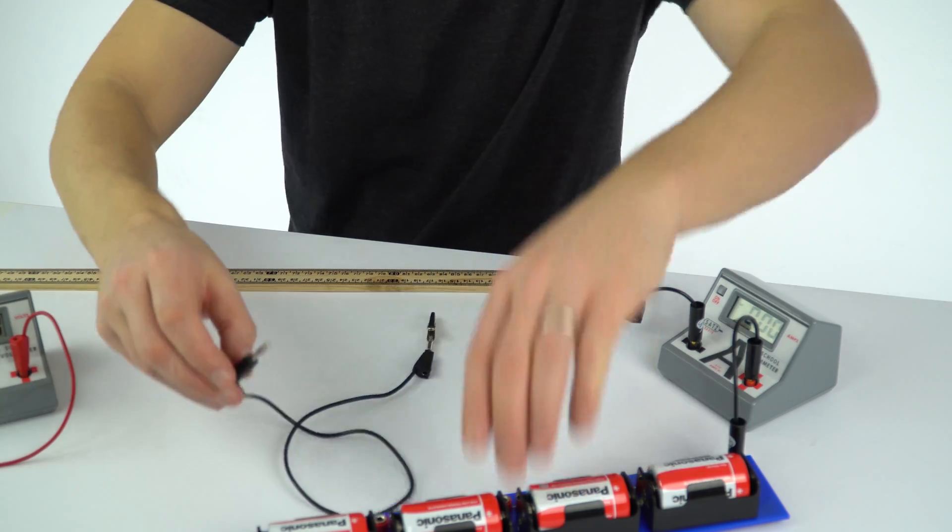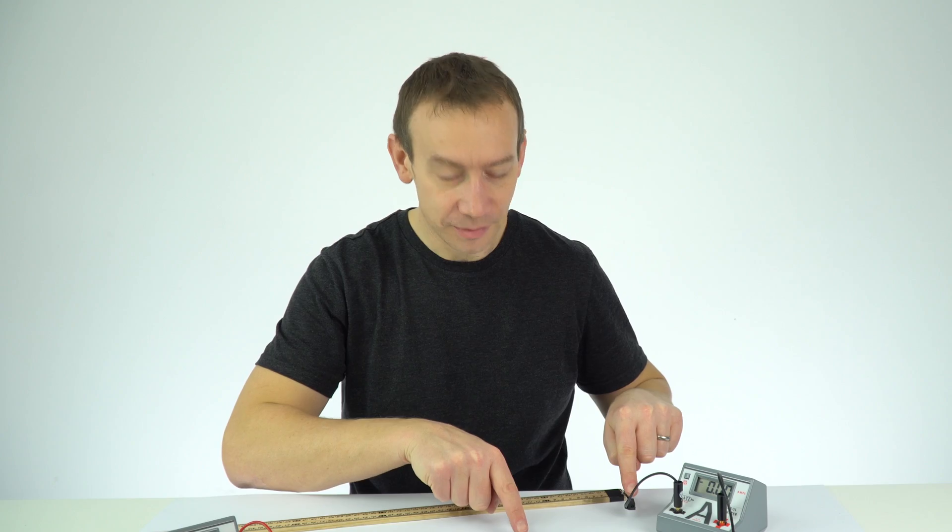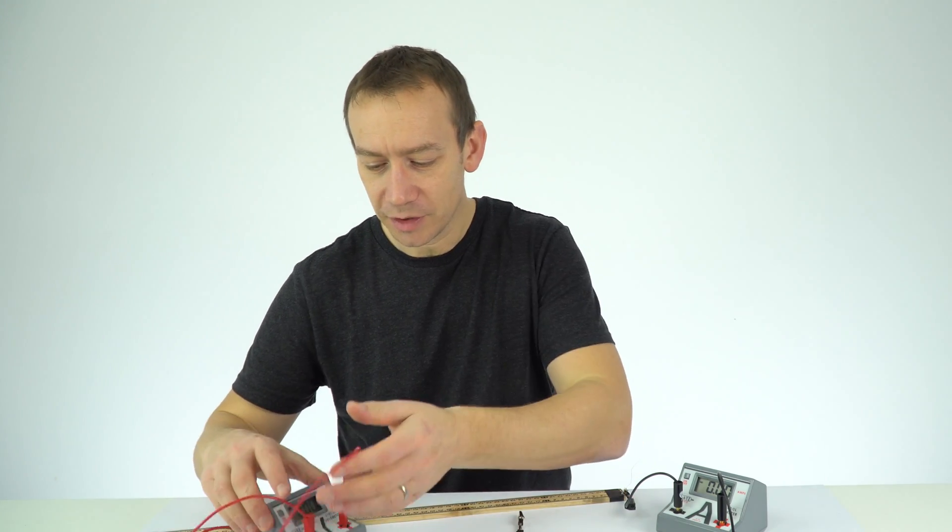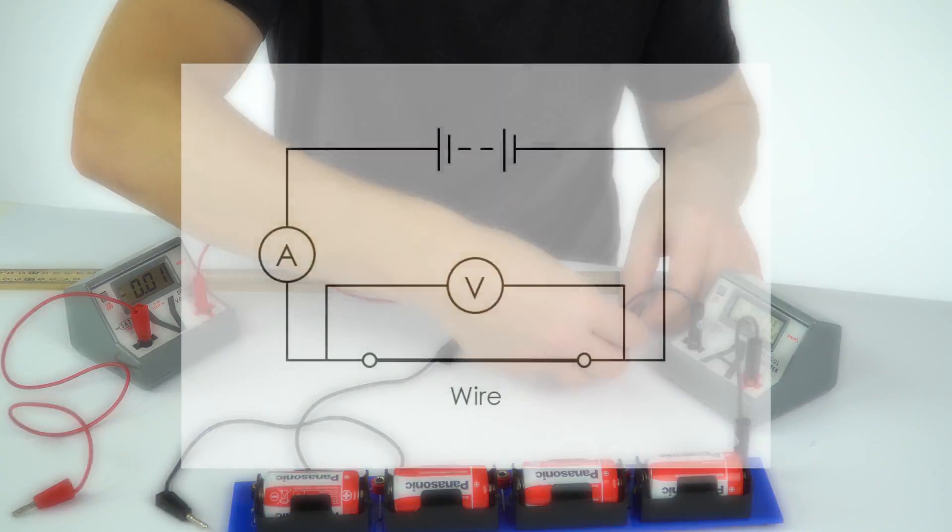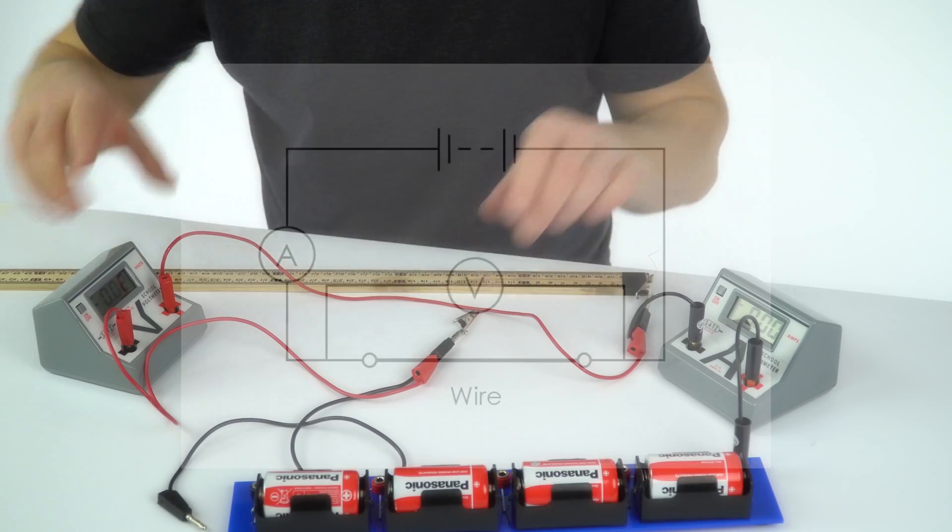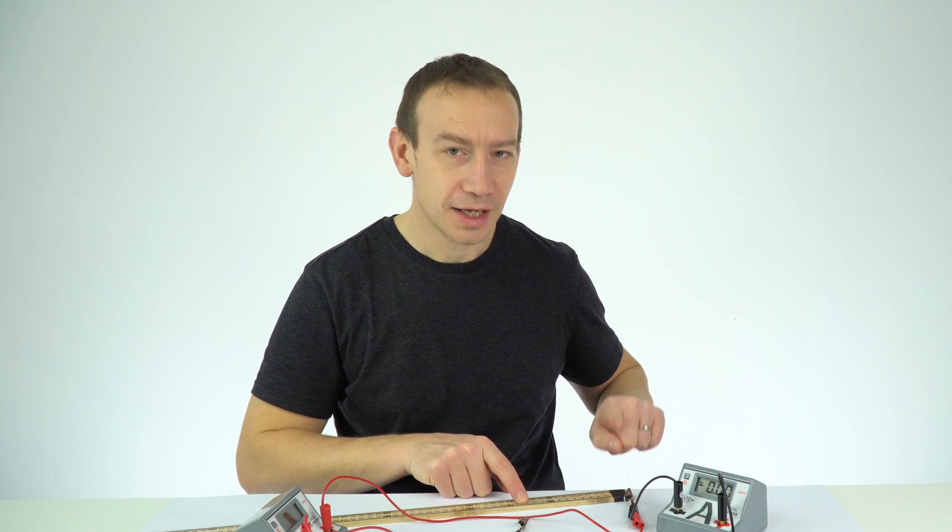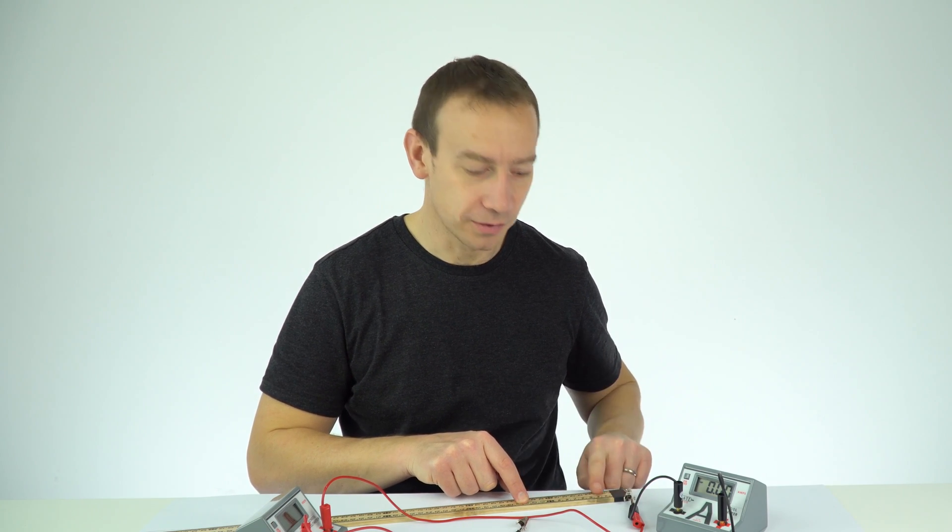So this will be connected with that and across this part of the circuit here I'm going to put my voltmeter in parallel. So I've got this connected like that and that means across this piece of wire we can measure the current going through it and also the potential difference across it.